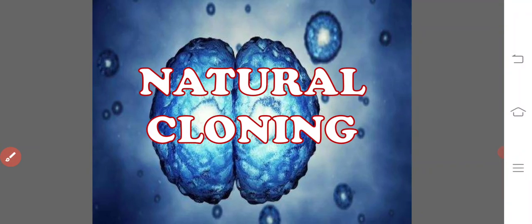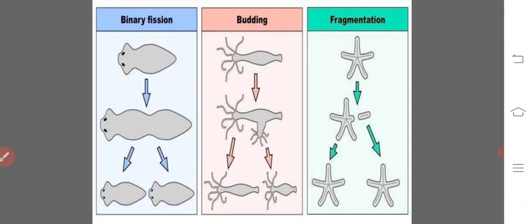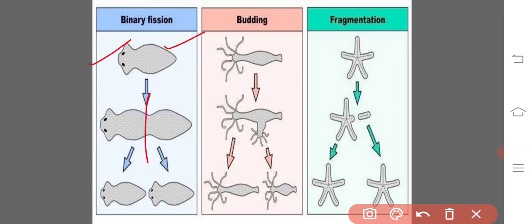In natural cloning, prokaryotic organisms like protozoans, for example paramecium, produce clones by binary fission or by budding. In eukaryotic organisms, gastrointestinal cells and skin cells undergo mitotic division and produce clones. This is usually seen in prokaryotes. Here we see the turbellarian which undergoes binary fission — one mother organism undergoes binary fission and forms two daughter cells, like mitotic division.